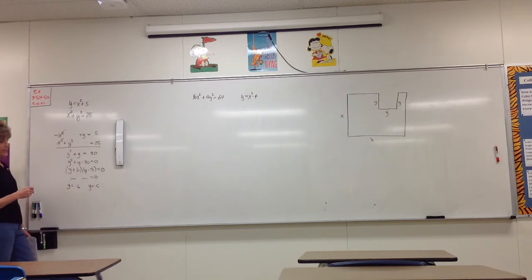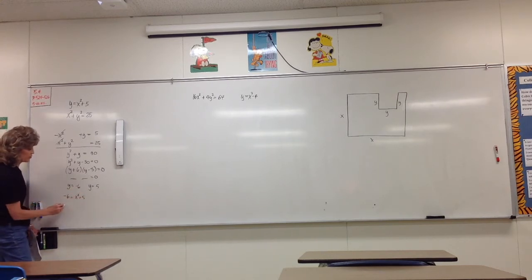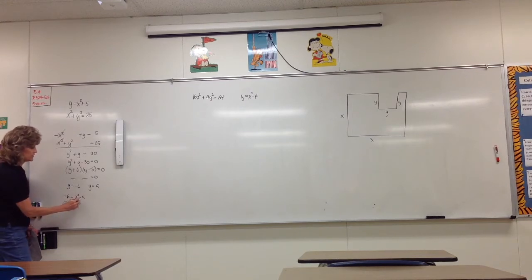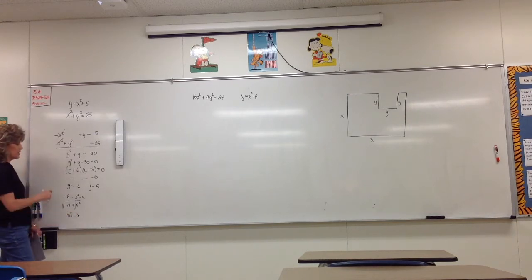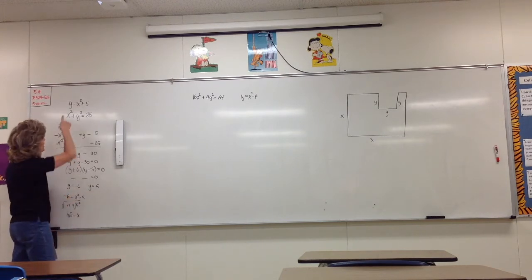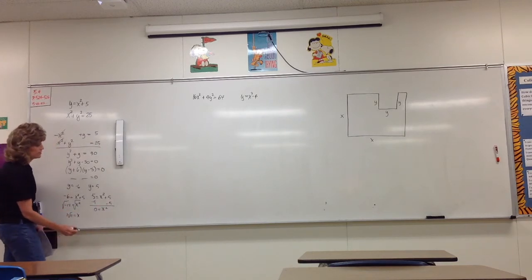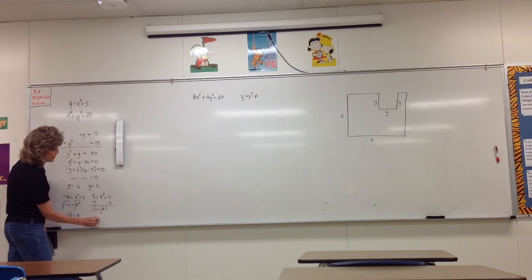Each y value has an x to go with it. Plugging y equals negative 6 into the first equation: negative 6 equals x squared plus 5. Subtracting 5 gives negative 11 equals x squared. Taking the square root gives an imaginary number — so when y equals negative 6, there's no real point of intersection. But if y equals 5: 5 equals x squared plus 5, so x squared equals 0, meaning x equals 0.